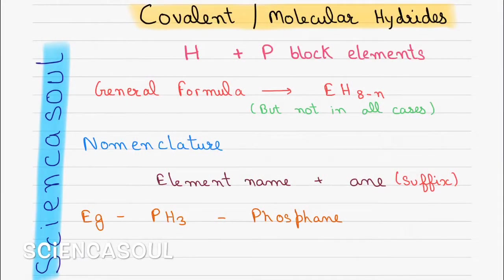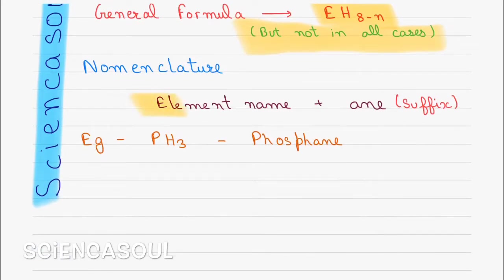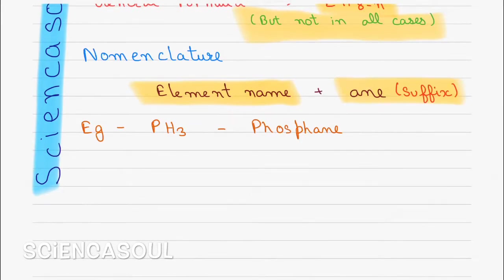Now we will learn about covalent or molecular hydrides. This type of hydride are formed when hydrogen combines with p-block elements, which includes group number 13 to 17. They have general formula EH 8 minus n, but not in all cases. Nomenclature: first we will write element name, then suffix -ane. For example, PH3 will be called phosphane, but its common name is phosphine.